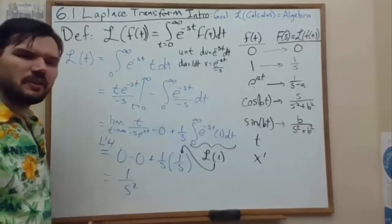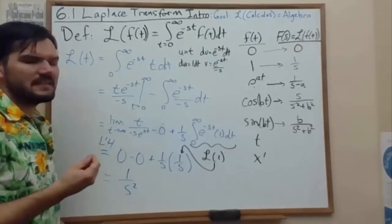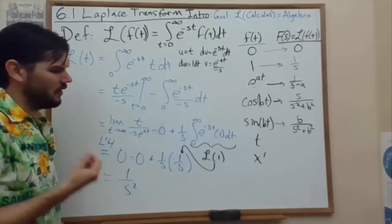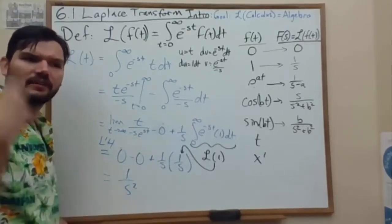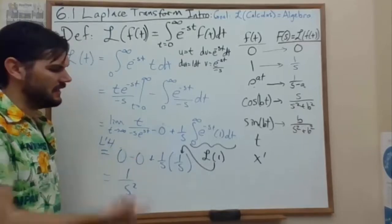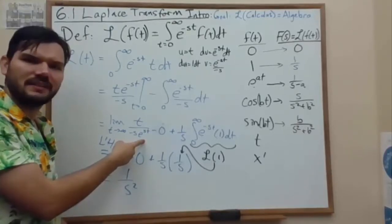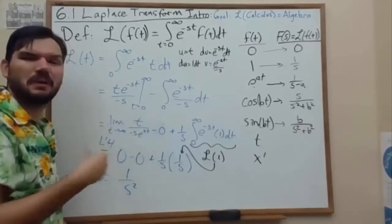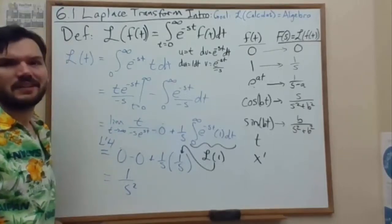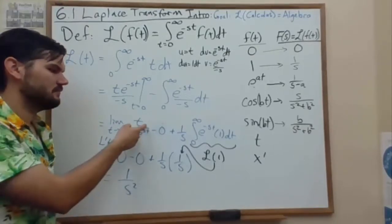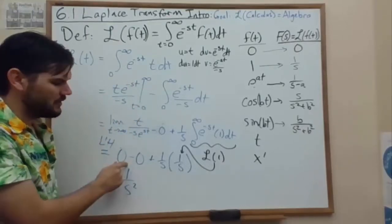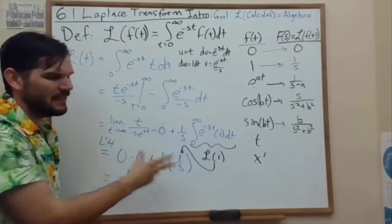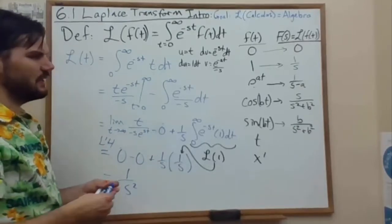Now this example, L'Hopital's rule, reminds us of the fact that our function t needed to be bounded by an exponential, which means that it can't grow any faster than the exponential e to the st. And because polynomials don't grow faster than exponentials, this is exponentially bounded, which means that the limit at infinity goes to 0 and the rest converges. Good check on that.